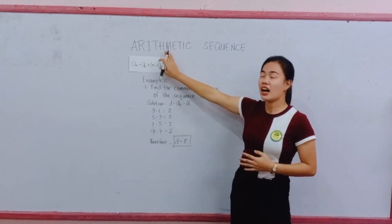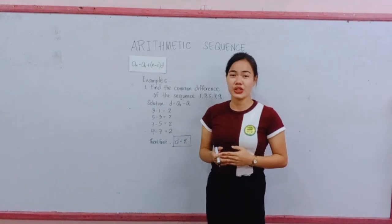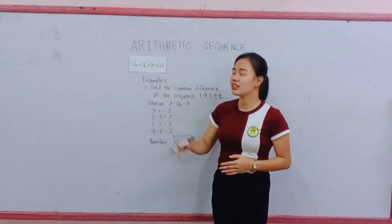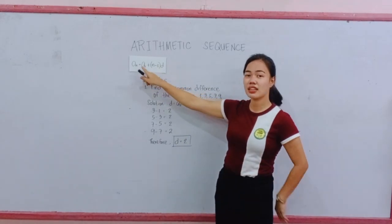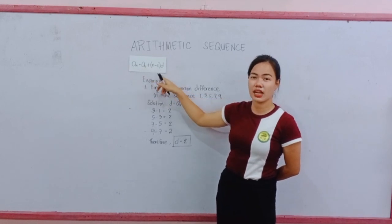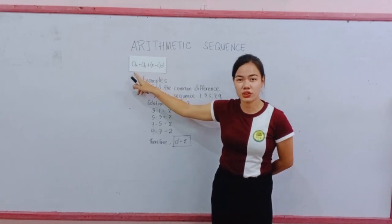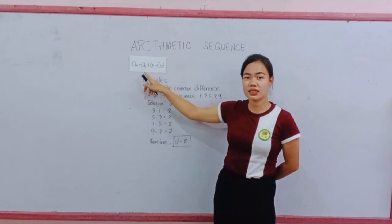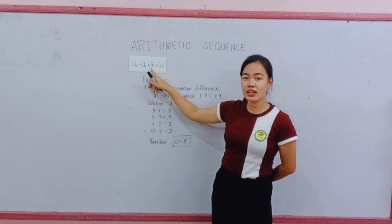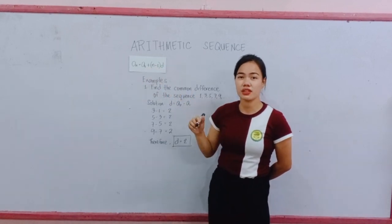The topic is Arithmetic Sequence. The formula on how to get the Arithmetic Sequence is A sub N equals A sub 1 plus N minus 1 times D. Where A sub N is our last term, A sub 1 is our first term, N is our number of terms, and D is our common difference.